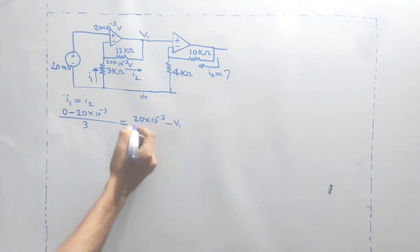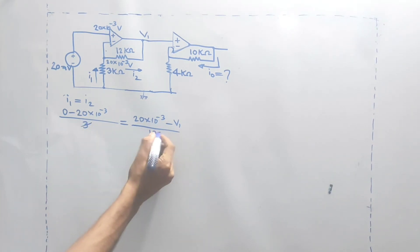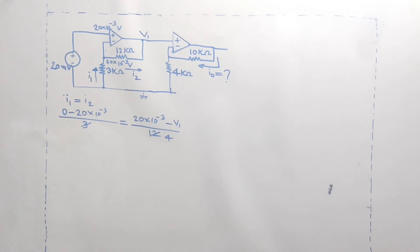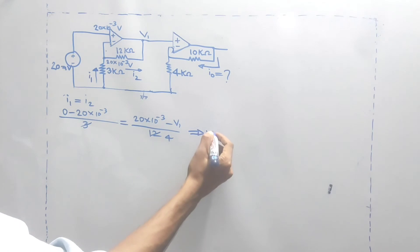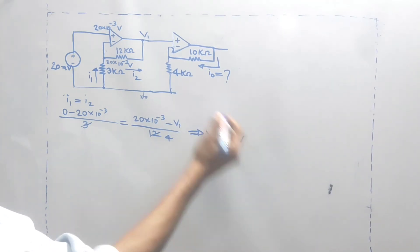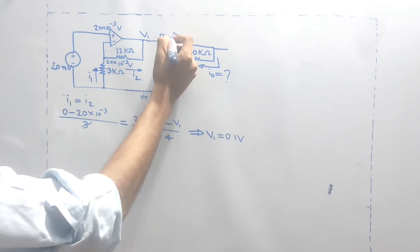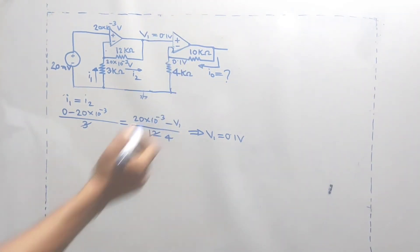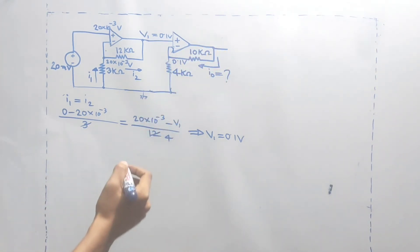Minus b1 divided by 12, 3, 4 — cut out there. 4 minus 4 into 12, 4 into 20 into 10 inverse 3, task law 20 into 10 inverse 3. Minus answer: 0.1 volt. b1 is 0.1 volt.